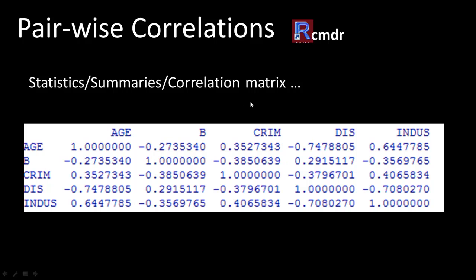In R Commander, you can do Statistics > Summaries > Correlation Matrix, and then choose the variables for which you want to calculate the correlation coefficient. Here, instead of selecting all the variables, I selected only five variables: age, b, crim, dist, and indus. You can see all the pairwise correlation coefficients.